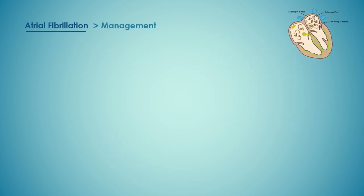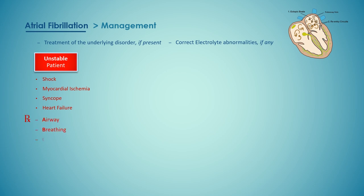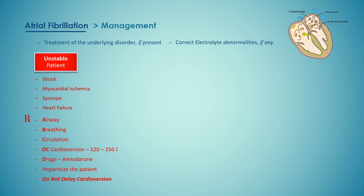When atrial fibrillation complicates an acute illness such as chest infection or pulmonary embolism, treatment of the underlying disorder will often restore sinus rhythm. Correct any electrolyte imbalances if present. In hemodynamically unstable patients — those with adverse signs like shock, myocardial ischemia, syncope, or heart failure — follow the ABC protocol of resuscitation and then perform DC cardioversion by providing a synchronized shock starting at 120 to 150 joules. If DC shock alone is unsuccessful, this can be combined with amiodarone. Heparinize the patient but do not delay treatment in order to start anticoagulation.